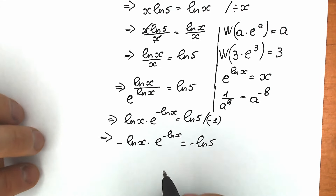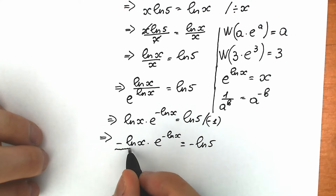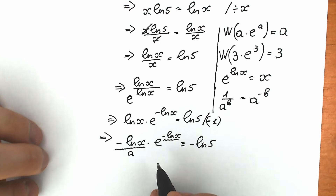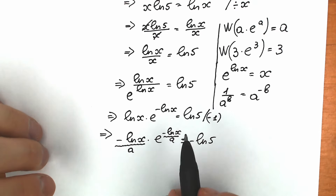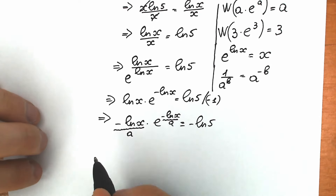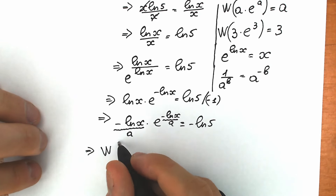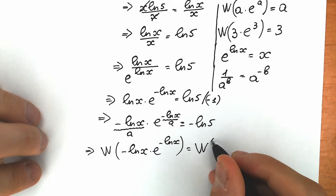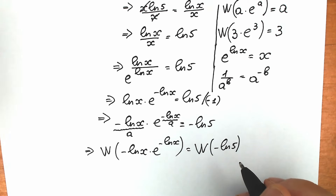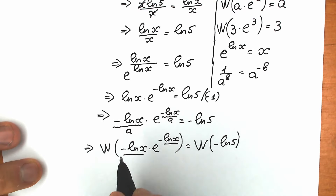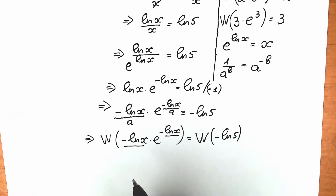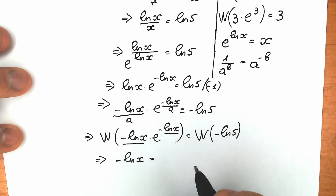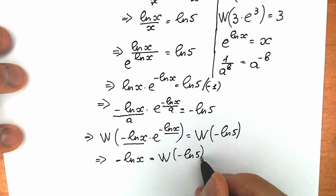If we look closely, we have a great expression for the Lambert W function. Let's call minus natural log x as 'a'. We have a times e to the power a, which is exactly the form we need. So applying the Lambert W function to both sides: Lambert W of (minus natural log x times e to the power minus natural log x) equals Lambert W of minus natural log 5. On the left side, this simplifies to minus natural log x.